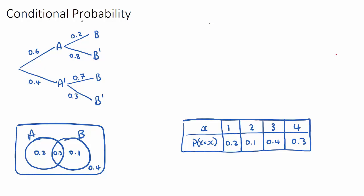The conditional probability formula — you can find this in your formula booklet or a textbook — says that the probability of some event A, given that some event B has happened, is going to be the intersection of the two: the probability of A and B happening, divided by the probability of B.